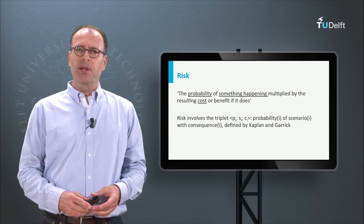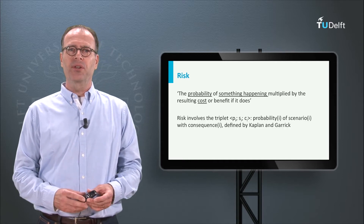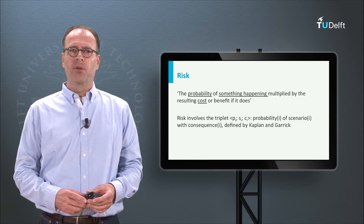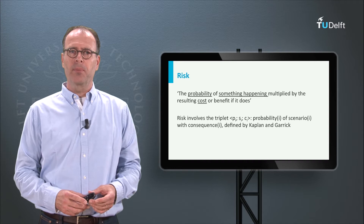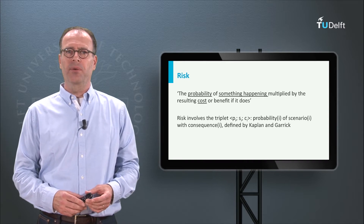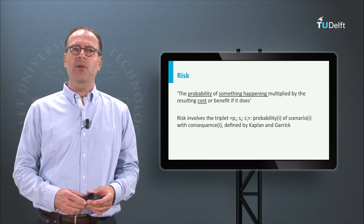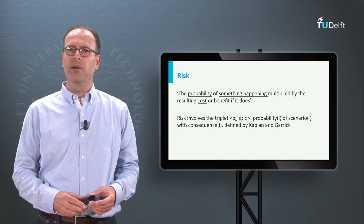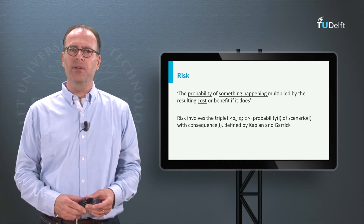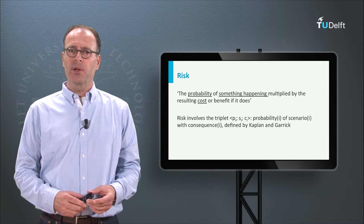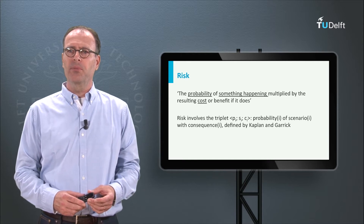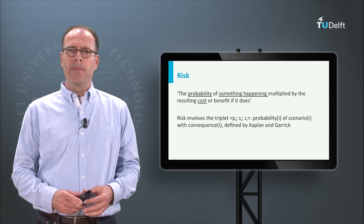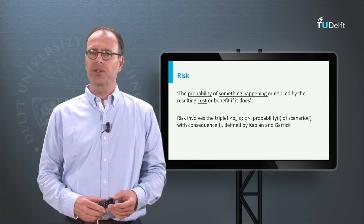The risk triplet is the set of three questions used to define risk. The first question is: What can go wrong? — represented by the S of scenario. The second question is: How likely is it? — represented by the P of probability. The third question is: What are the consequences? — represented by C. I will come back to this triplet several times more during this lecture.